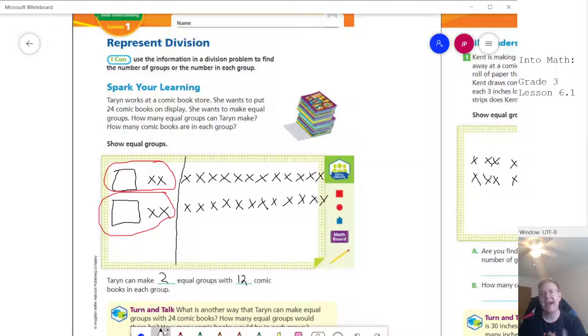I don't have to do it with two equal groups - I actually have several different options. The turn and talk at the bottom talks about other ways we could do that. We could actually circle groups of 2, so we could make 12 equal groups with two comic books in each group.